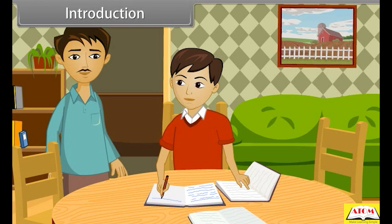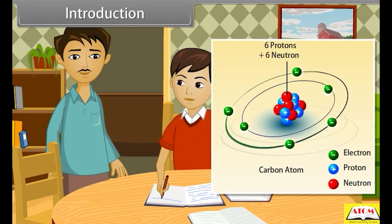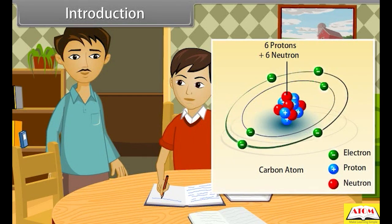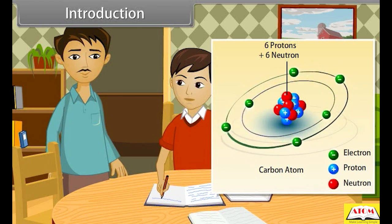Atoms join together to form a molecule. What kind of materials are there in the atoms? Atoms consist of electrons, protons and neutrons, and a central core which is called the nucleus. It sounds interesting — can you tell me more about it?